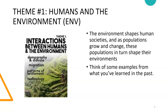Theme number one: humans and the environment. The environment shapes human societies. As populations grow and they change, these populations in turn shape their environments. We live here in Michigan. We have four seasons. We act differently than people who live in the desert or people who live on an island. Think of some examples of how human beings have adapted to their environment. Some people live with nature; some try to really alter nature and create things to overcome the environment. The environment and geography affects the way people live throughout time.